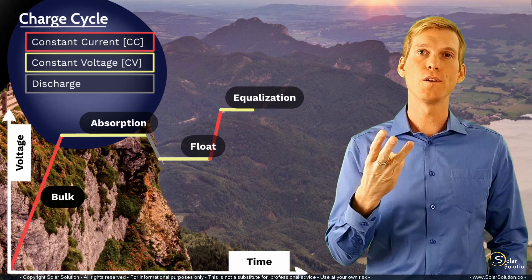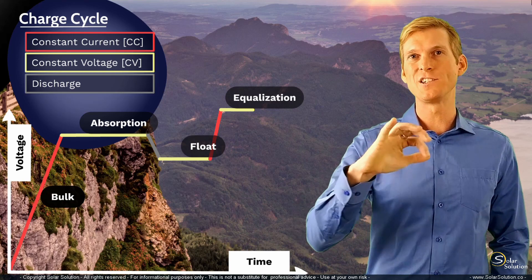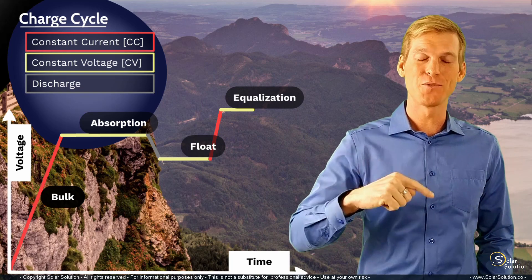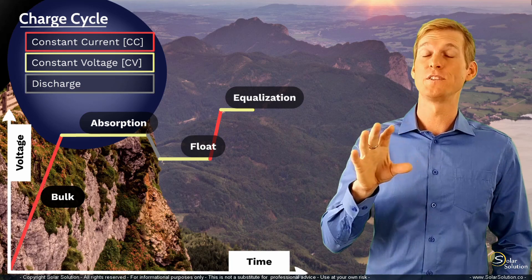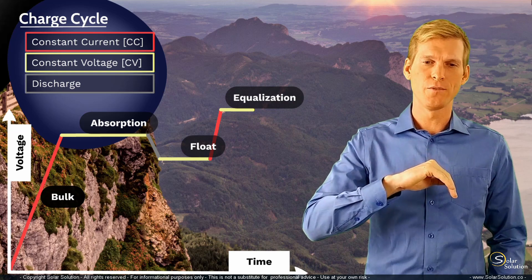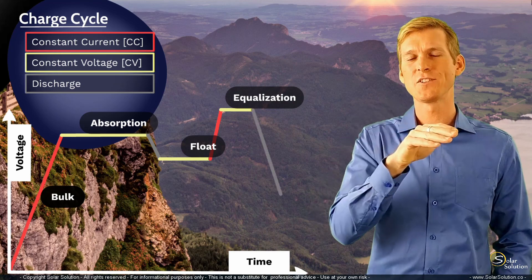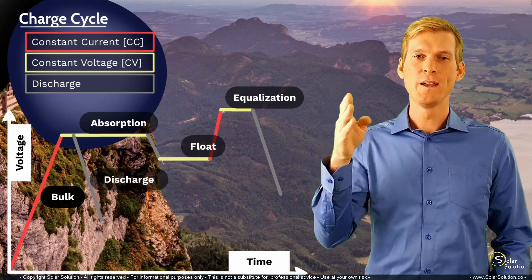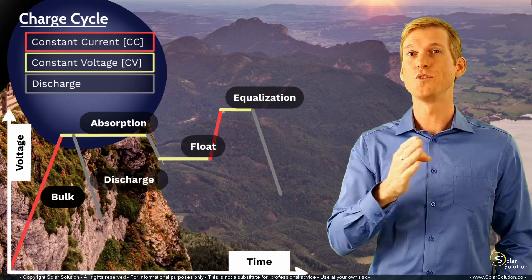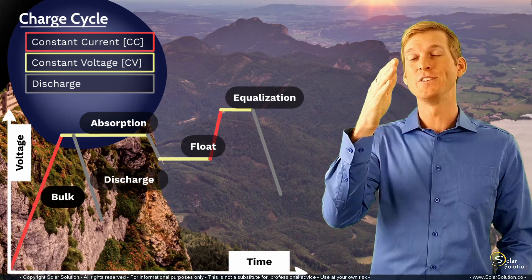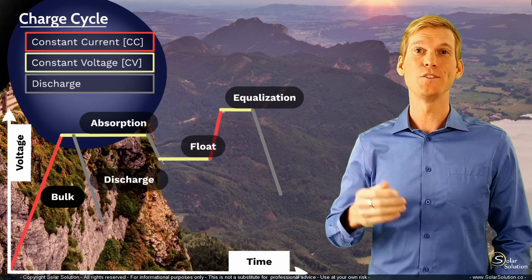Now the combination of the first three steps, so the bulk, absorption and float, is considered as a complete charging cycle. But you can imagine that you're sometimes not able to run all the way through these three steps. So what might happen for example is that maybe you finish the whole bulk stage and you're in absorption stage, but you actually don't reach the end of absorption, that somewhere halfway in the absorption stage you would start to consume electricity from the battery, so you're actually starting to discharge the battery and the voltage would slowly drop.